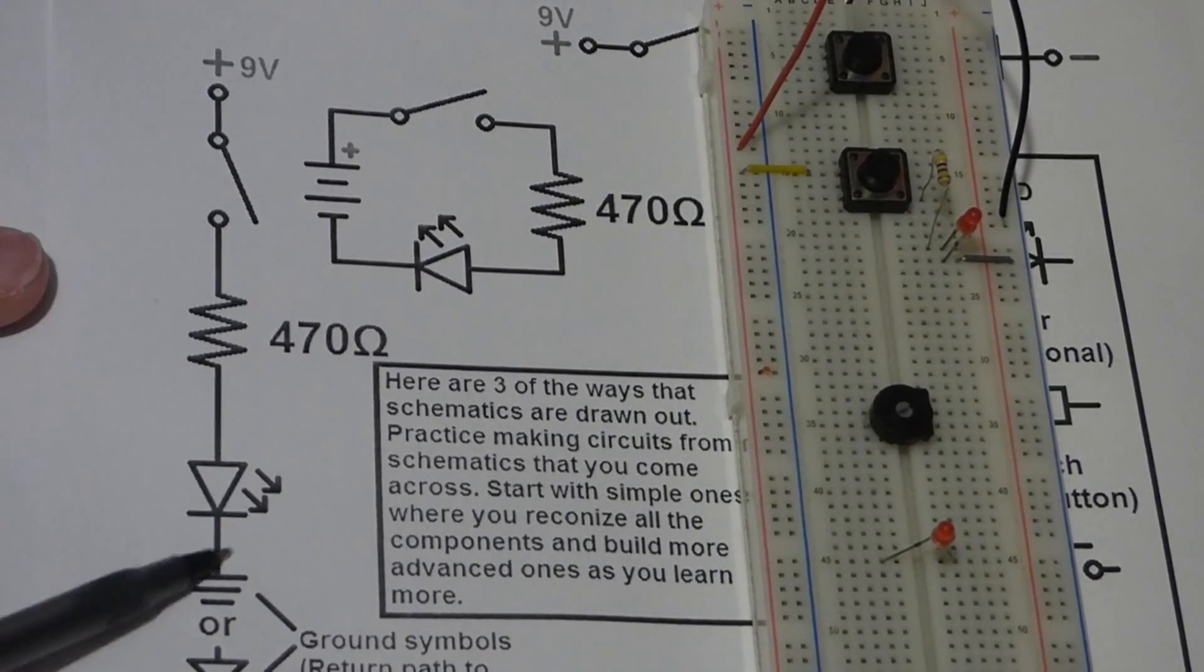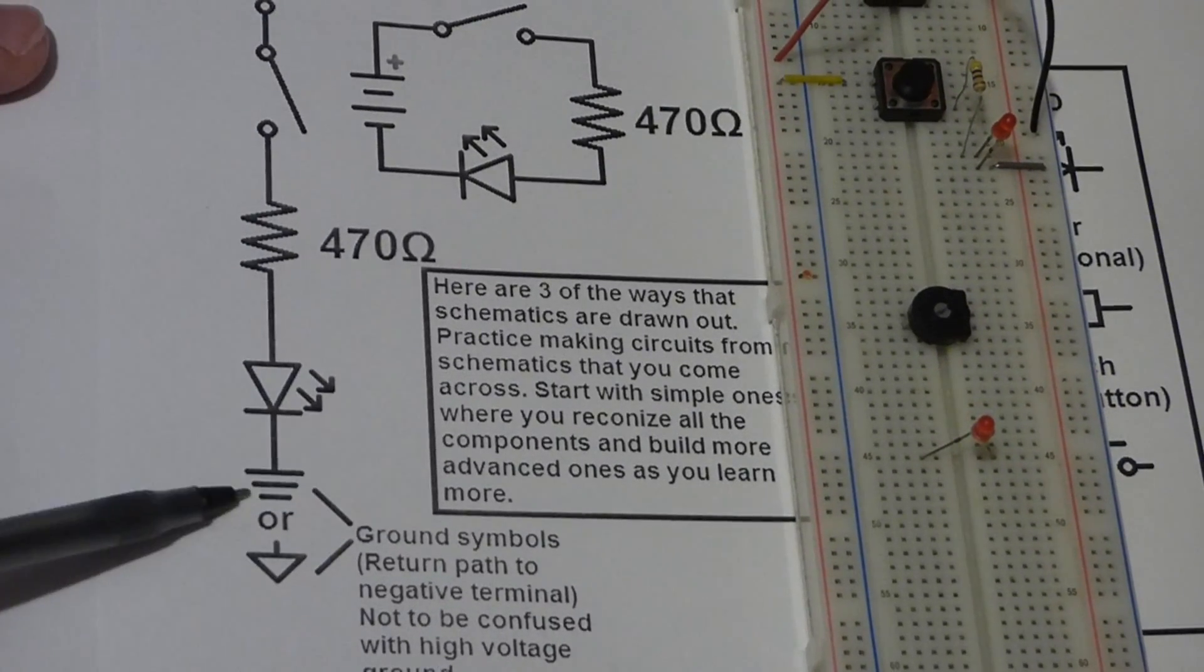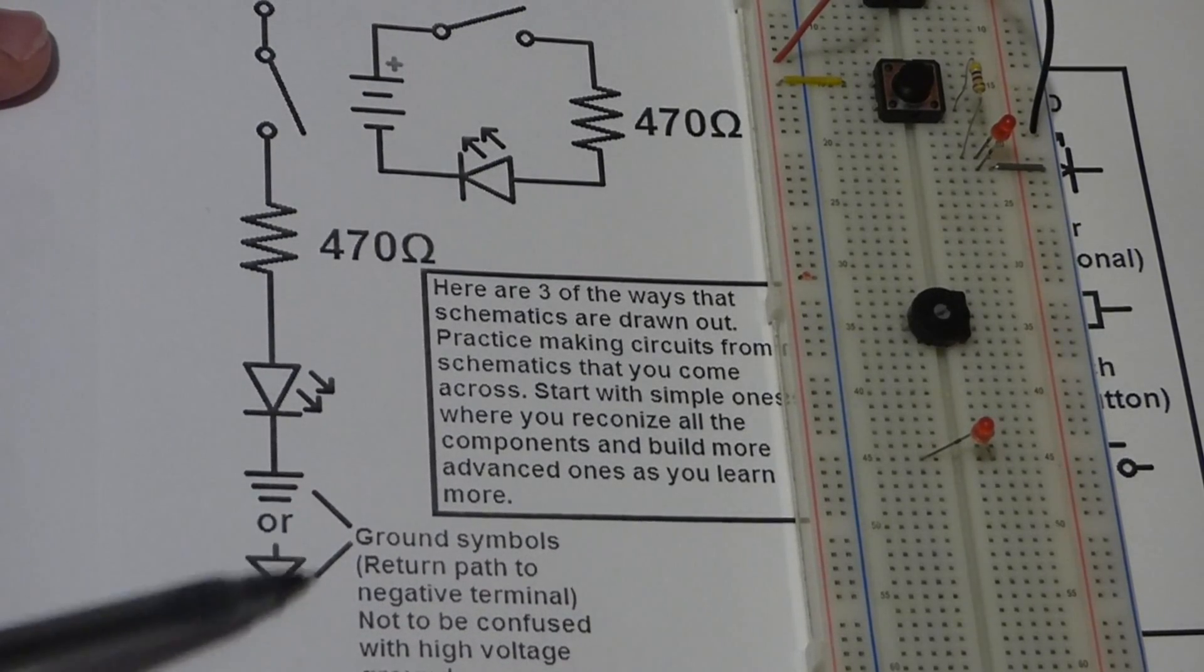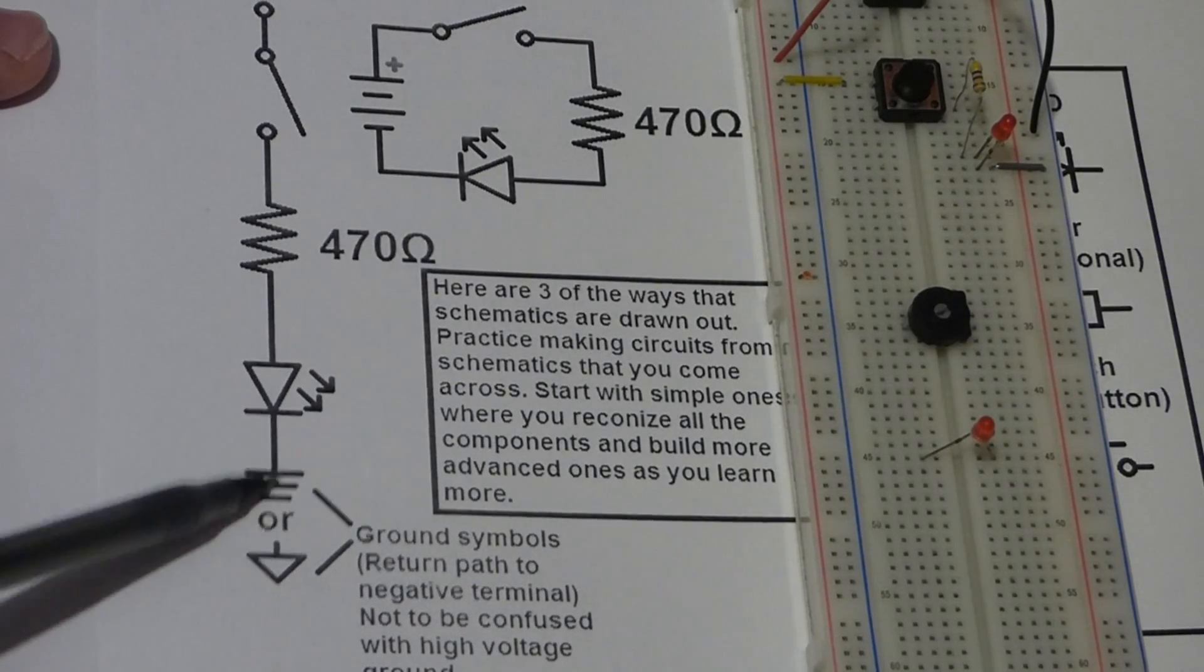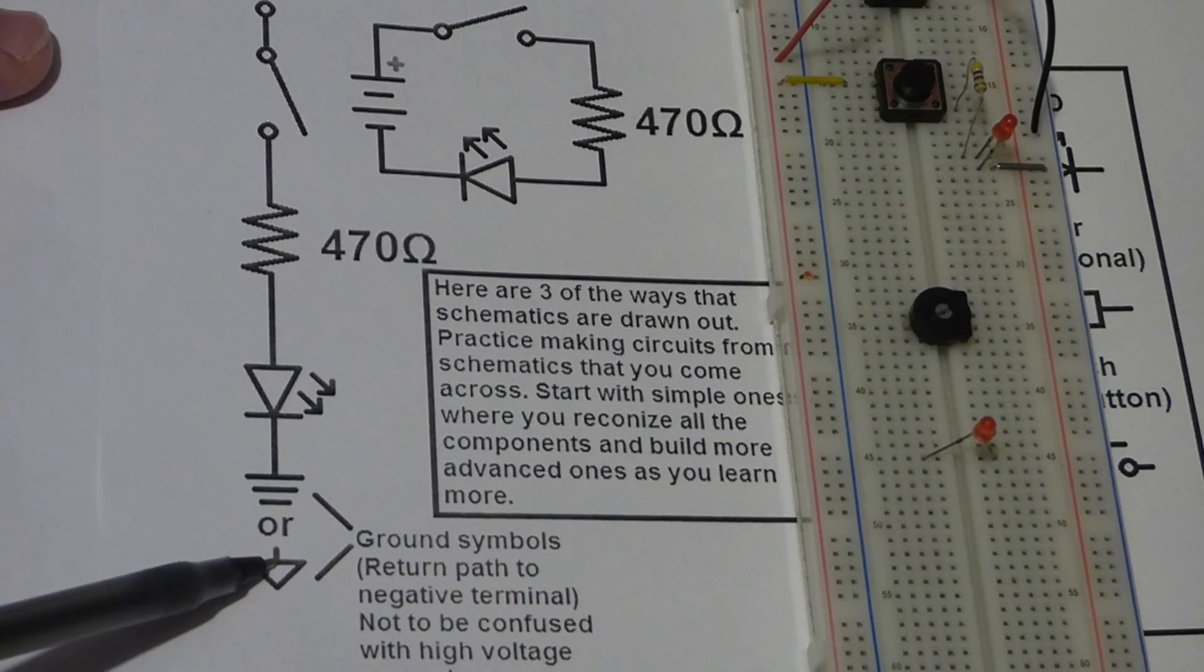Also you can go top to bottom. And now this one shows instead of the negative sign we have a ground symbol. Sometimes it's like this and sometimes it's a triangle. And all that's really telling you is this has to go back to the negative side of the battery, this side of the LED.